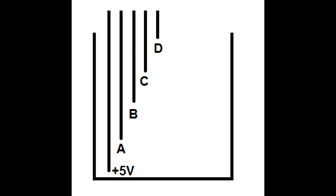As the water keeps filling, A gets connected to 5V first, then B, then C and finally D. Whenever these points are connected to 5V, the corresponding LEDs glow.